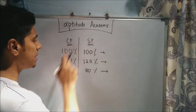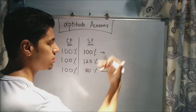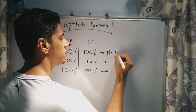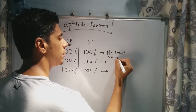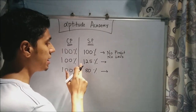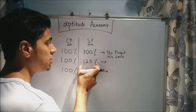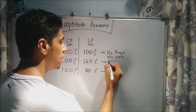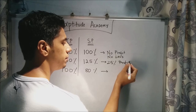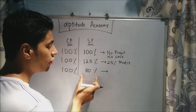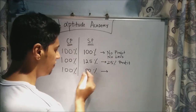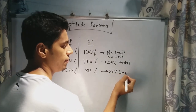In general, if your cost price is 100%, let's see the different scenarios where your selling price will vary. If selling price is 100% of cost price, you will have no profit, no loss, because you're selling for the same price you bought it. If your selling price is 125% of your cost price, you will have 125 minus 100 — that is 25% profit. Similarly, if you're selling at 80% of the cost price, it's a decreased amount, so you will have 20% loss.